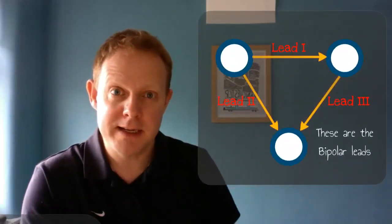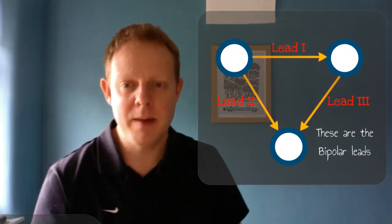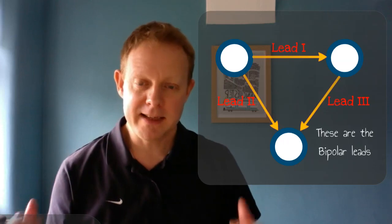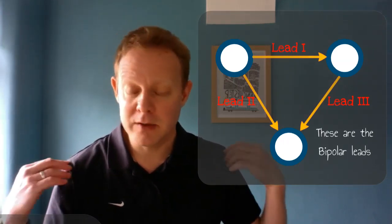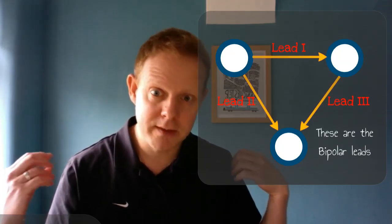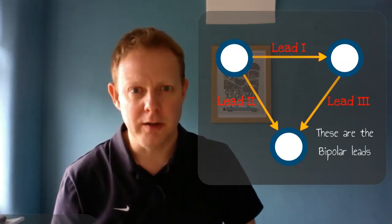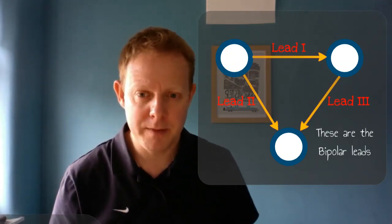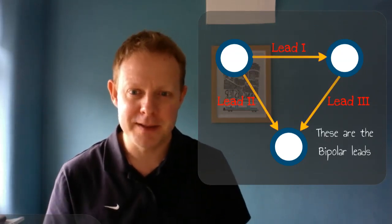So let's start with the limb leads, and let's start with the easy ones, leads 1, 2, and 3. Now remember the practicality of how you actually get this recording. It's a voltmeter, it's recording voltage against time, and remember where you've put your sticky labels. So you've put sticky labels on the right shoulder, the left shoulder, the left foot, and you've put the neutral on the right foot.